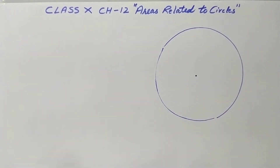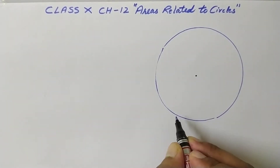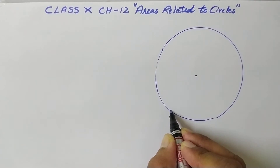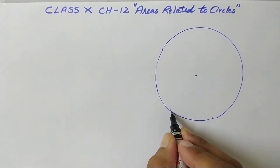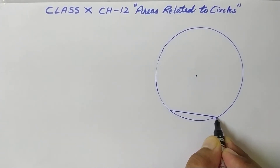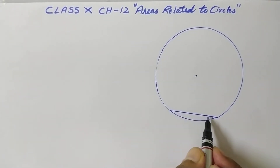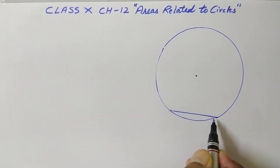Next, what is a chord? If I join any two points on the circle, I get a chord. So a chord is a line segment joining any two points on the circle.